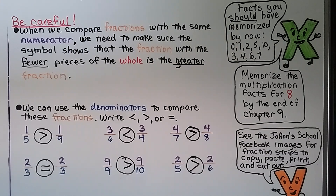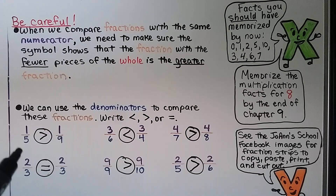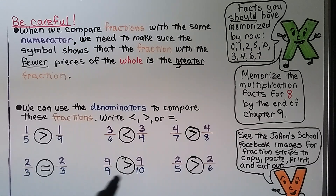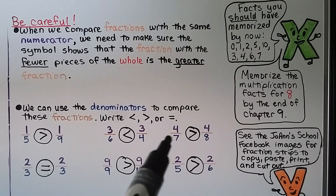So remember, when we're comparing fractions with the same numerator, we need to make sure the symbol shows that the fraction with fewer pieces of the whole is the greater fraction. This has fewer pieces, so it's the greater fraction. This has fewer pieces, it's the greater fraction. This has fewer pieces — this is the greater fraction.